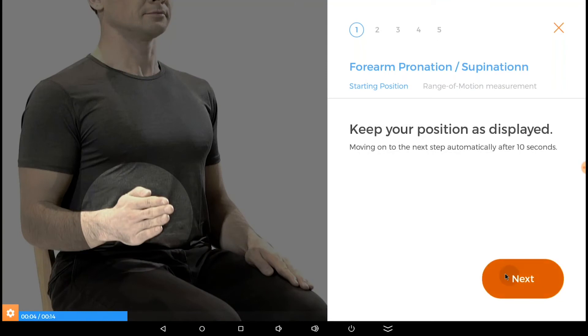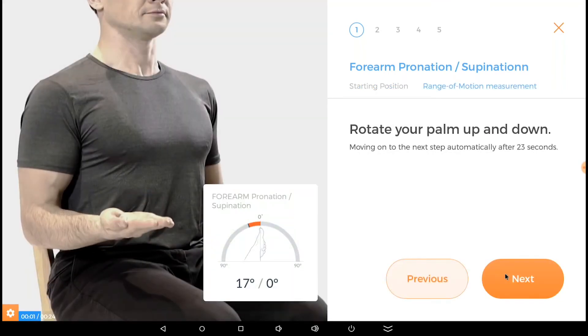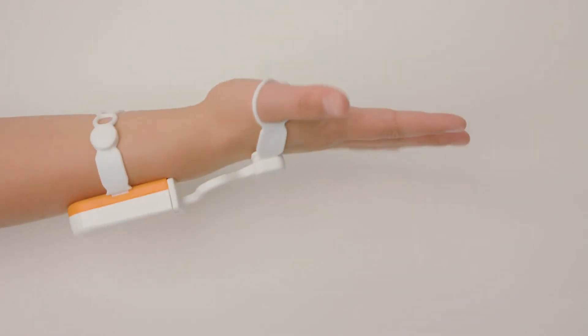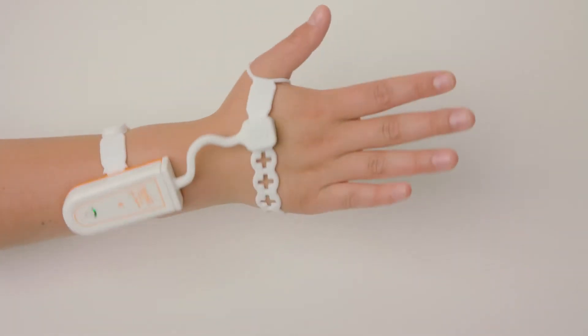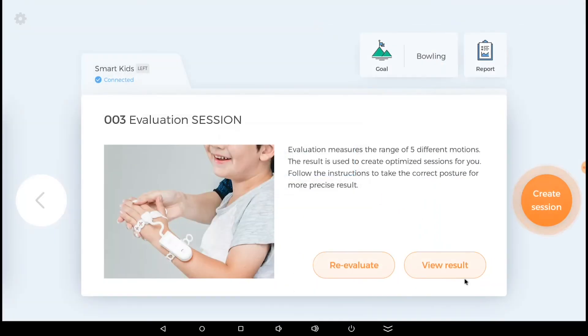The prompts will guide you through the starting positions and movement patterns required to record data for the three dynamic wrist movements. Once you have completed the evaluation, the program will prompt you to begin a training session.